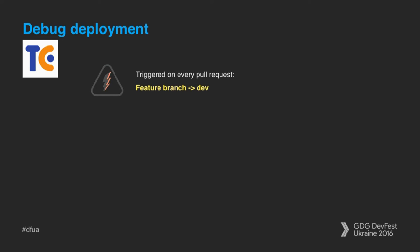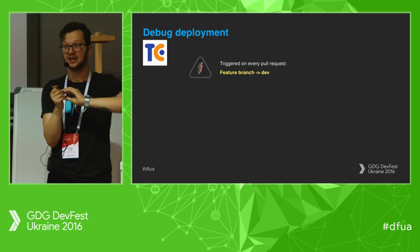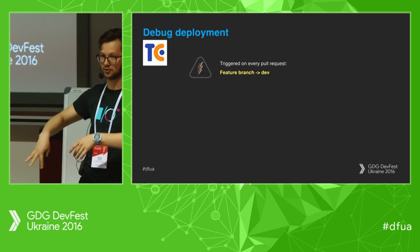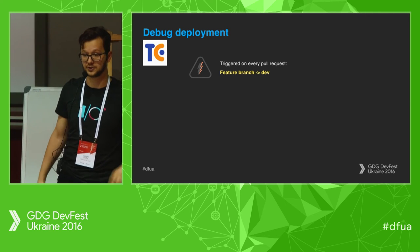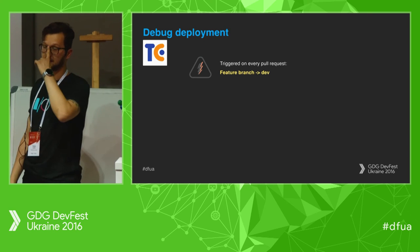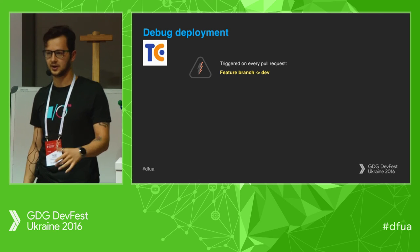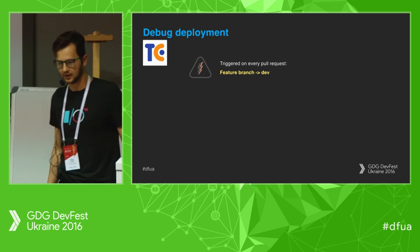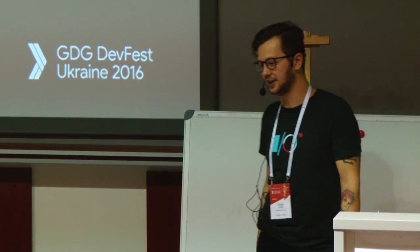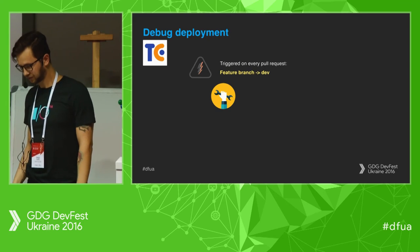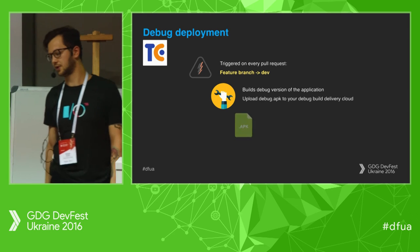Debug deployment: every time you finish a feature you want a debug build — but you don't want to manually build and deploy to every device or send it to QA. I personally use DeployGate. It's awesome and has good Gradle integration — you run a Gradle task and it deploys to all devices logged into that account. It's a paid service but has a free version with one account, which you can use for the whole team.